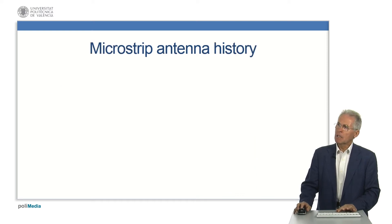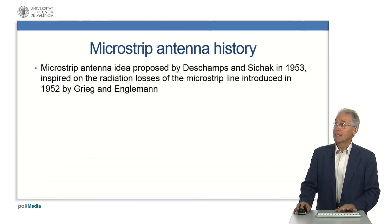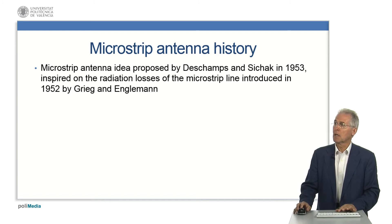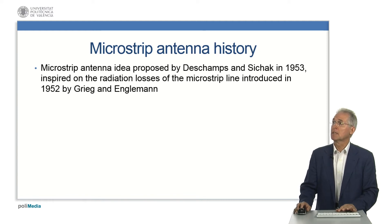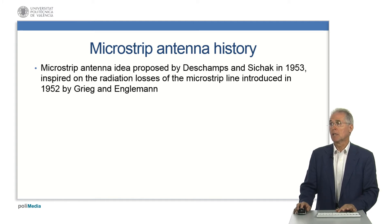The idea of using microstrip structures as antennas was proposed by Deschamps and Sichak in 1953. This idea was inspired by the unwanted radiation losses of the microstrip line introduced one year before by Grieg and Engelmann. Not surprisingly, Deschamps, Sichak, Grieg, and Engelmann all worked at the same institution: the USA Federal Technical Communication Laboratories.